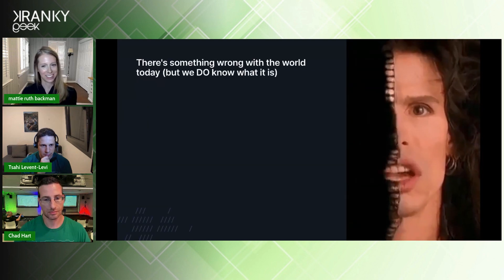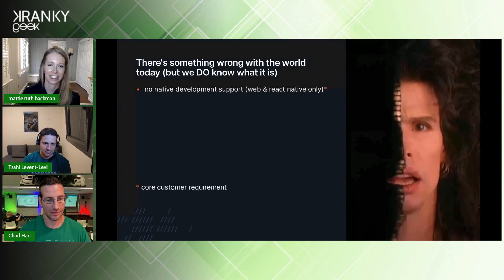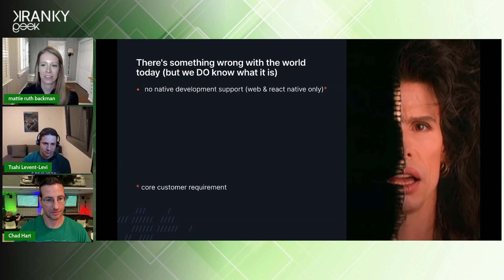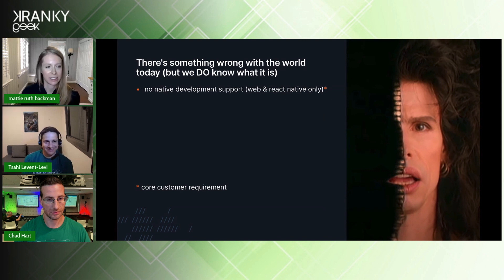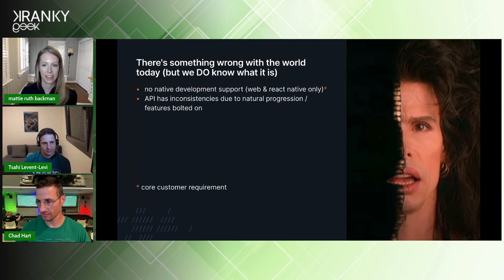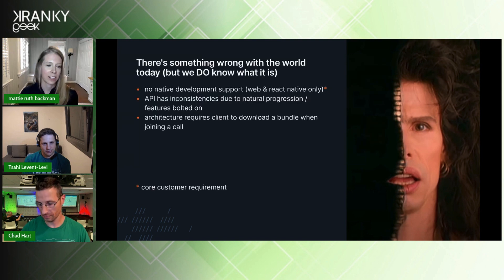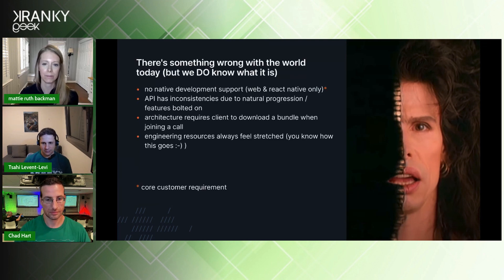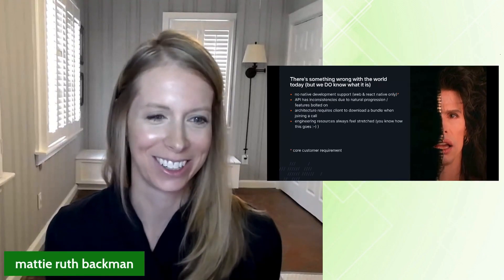But there's something wrong with the world today. Unlike Steven Tyler, we do know what it is. Primarily, we do not have native development support — we only support Web and React Native. This is a core customer requirement that's asked of us daily, so we know we need to build it. Next, since the existing API has been around and grown organically, like many APIs it has inconsistencies that naturally happen over time as you bolt on new features. Our existing architecture also requires the client to download a bundle when joining a call — small, but something we want to improve on. And our engineering resources always feel stretched.